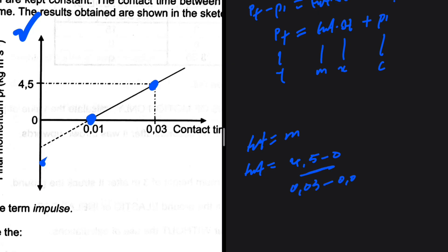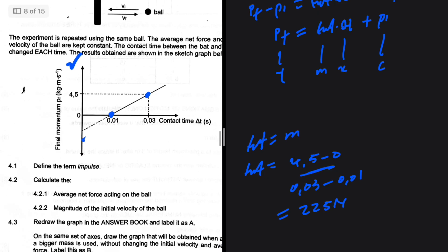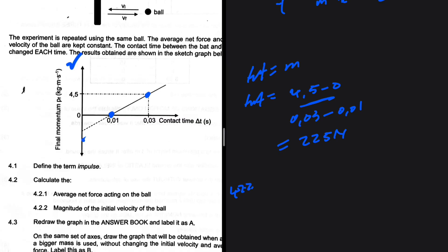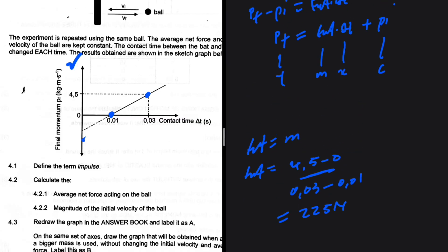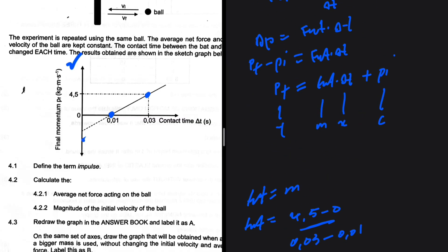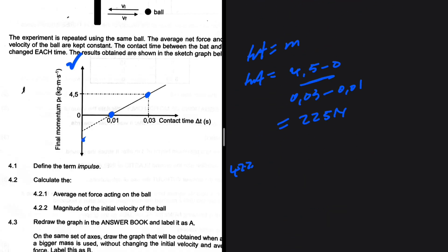And then 4.2.2, we are looking for the magnitude of the initial velocity. So we can find the magnitude of the initial velocity from the initial momentum. All right, so we then need to take our equation and find the initial momentum. So p_final equals F_net delta t plus the initial momentum. So the initial momentum is right there, it's our c.